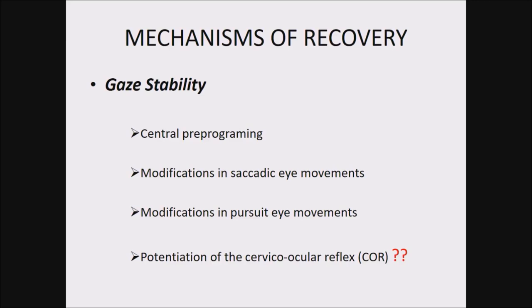One mechanism is central pre-programming for gaze stability. Our brain starts to predict head movements — before the patient moves his head, the brain can detect it, the planned head movement, and can move the eye before the head moves. The brain can also modify saccadic eye movements, and the patient himself can modify smooth pursuit eye movements to stabilize his gaze. The cervical ocular reflex was earlier thought to have a role, but nowadays it is proved it is not really significant in practical real-life head movements.